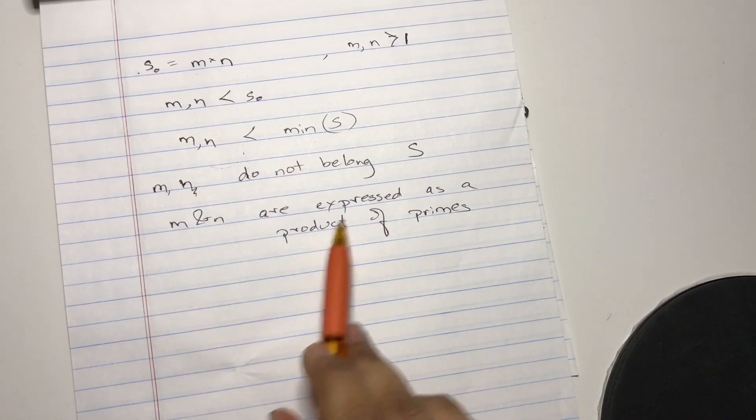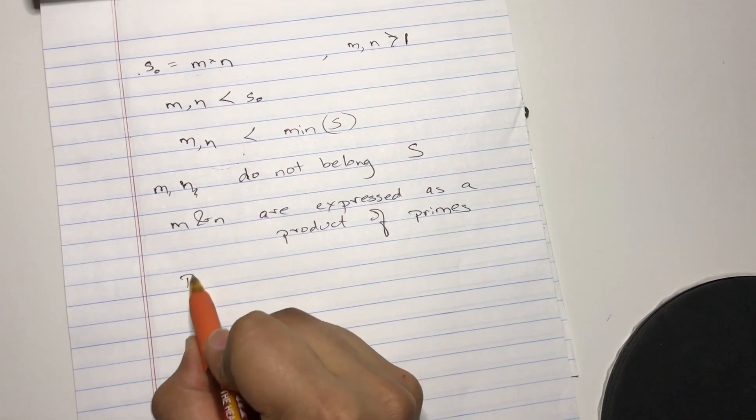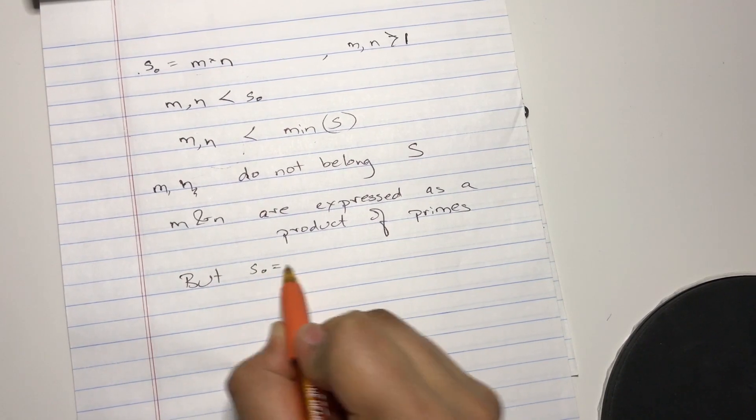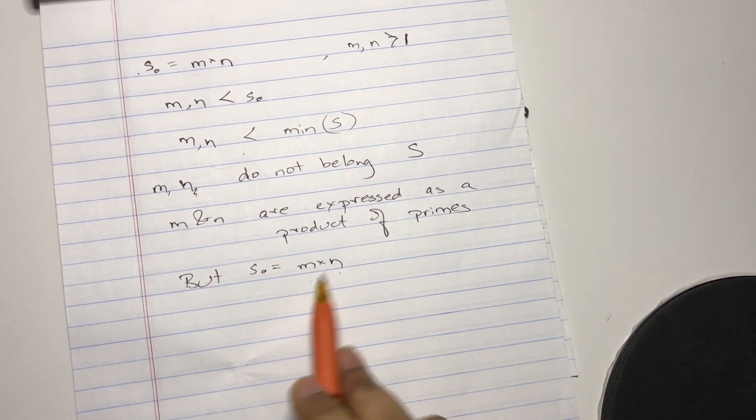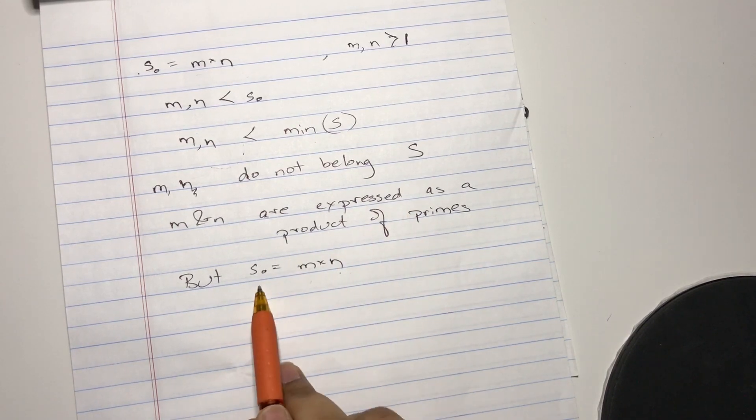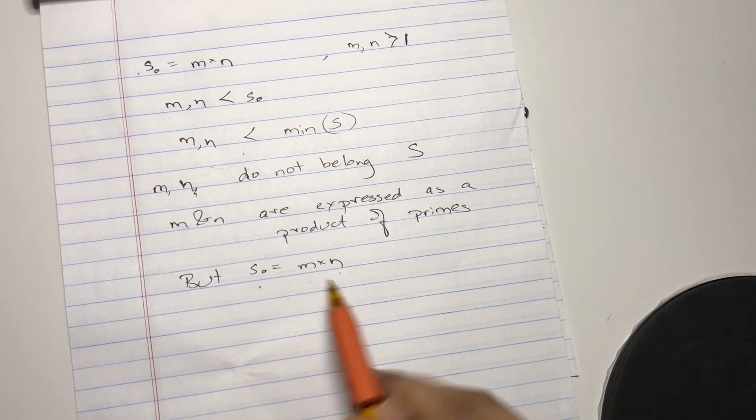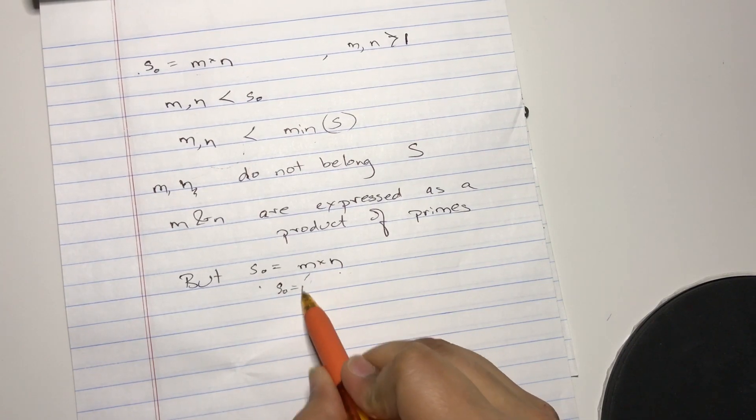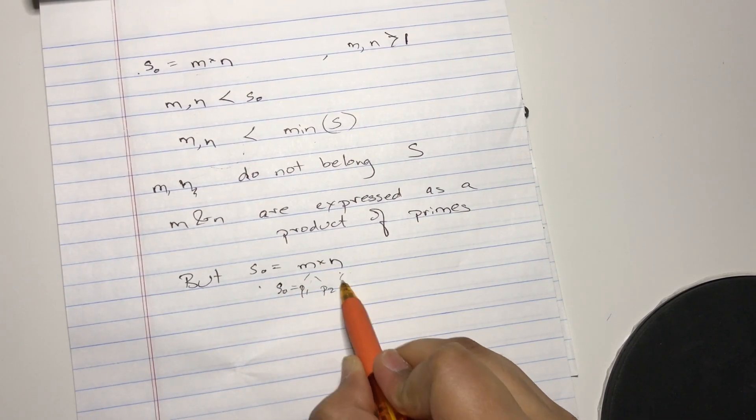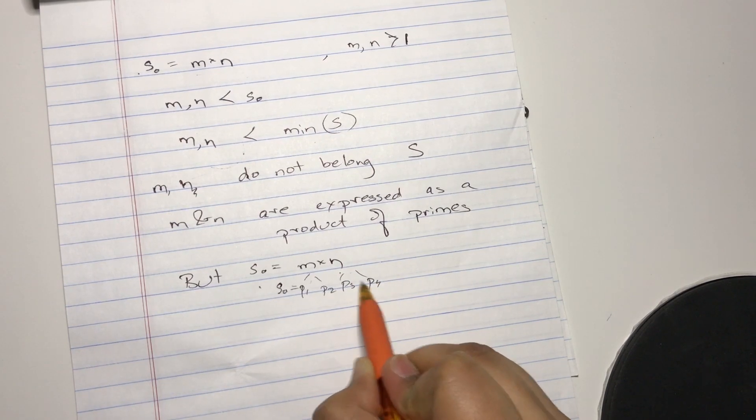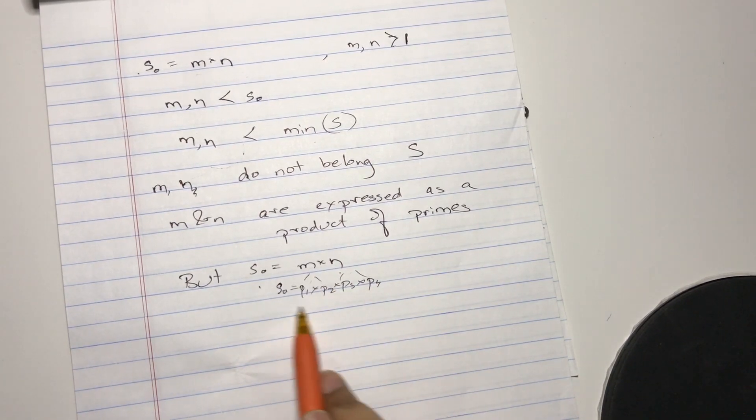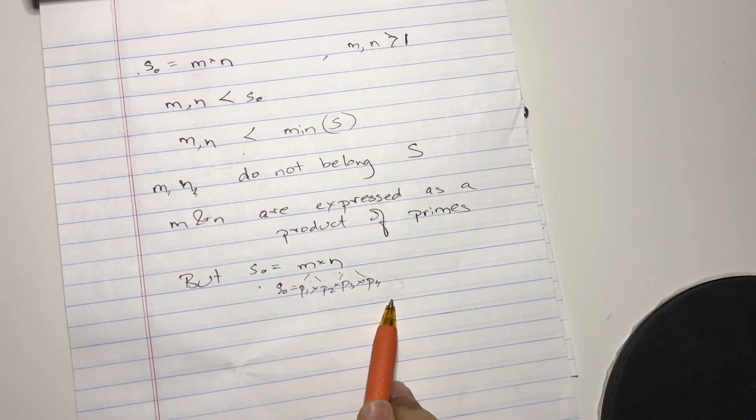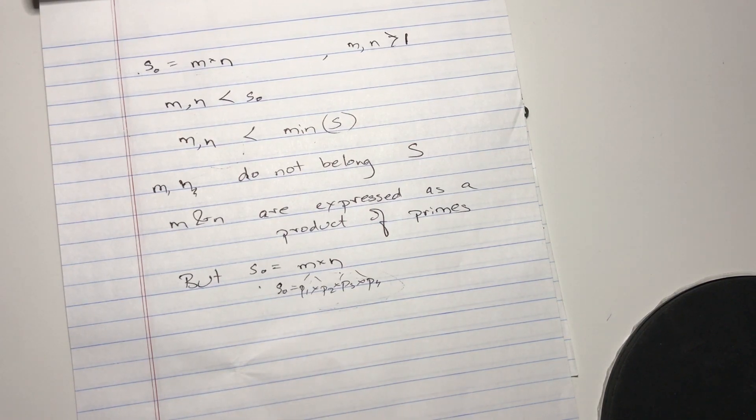So M and N can be expressed as a product of primes, but S_0 equals M times N. And if M and N can be expressed as a product of primes, so can S_0. Because S_0 equals, let's say, prime one times prime two, this is prime three, prime four, multiplication all over. So S_0 can be represented as a product of primes, and this is just an example. It could be more primes, it could be less.